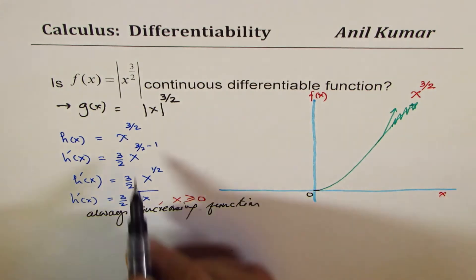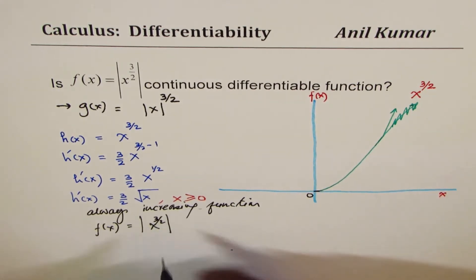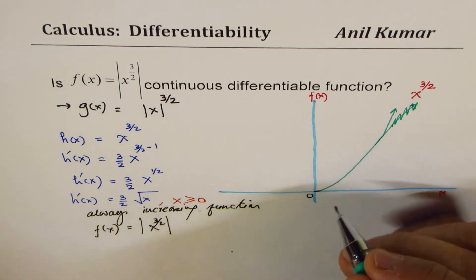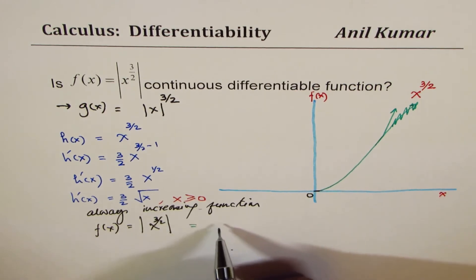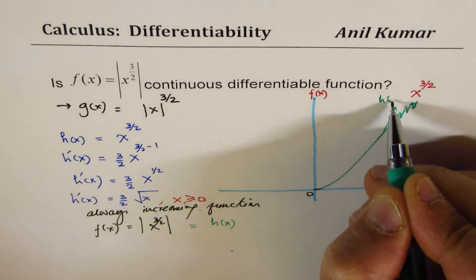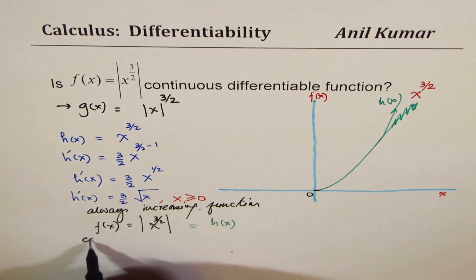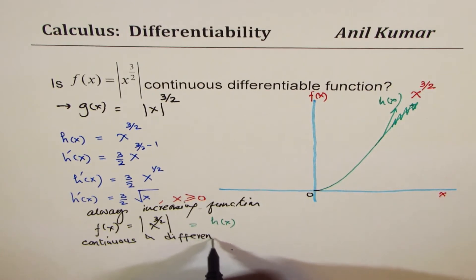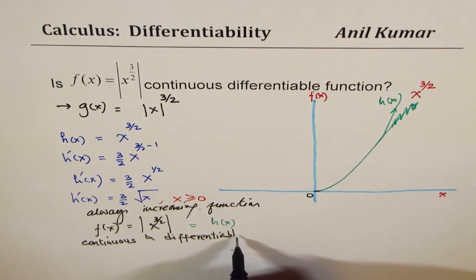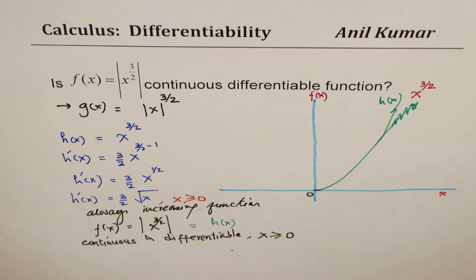Now let us consider both our functions. One is f of x, which is absolute value of x to the power of 3 over 2. If I take the absolute value of this function, it is the same as h of x, because h of x is always positive. So in that case, the function is continuous when x is greater than or equal to 0.